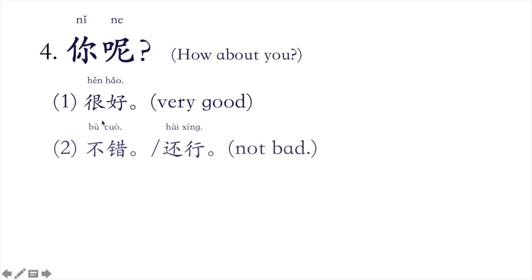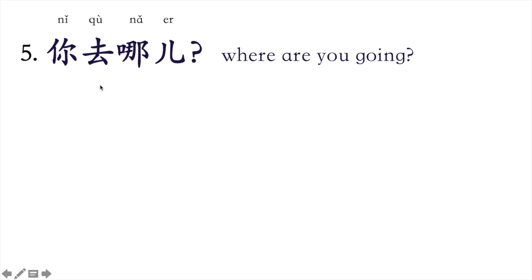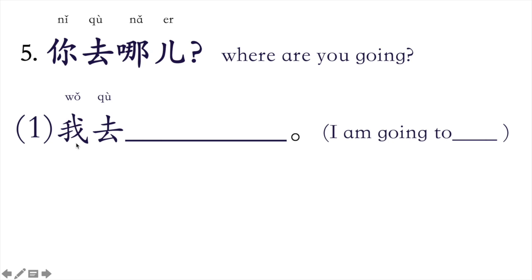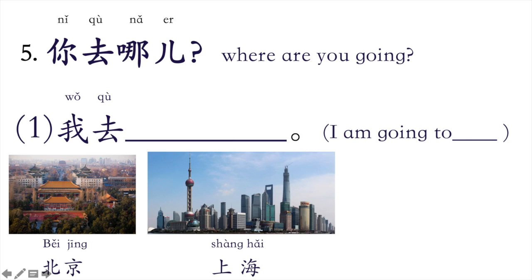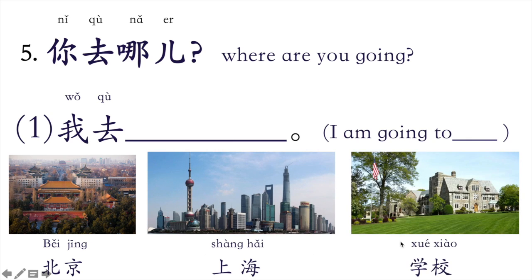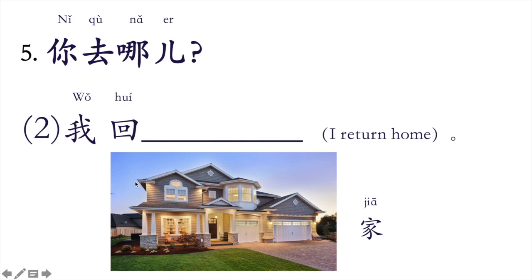很好，不错，还行，很忙，不太好。第五个，你去哪儿？我去北京，我去上海，我去学校。Still the same word，可是我回家，我回家。You need to change the verb by using 'return' instead of 去，go. 我回家，I return home.